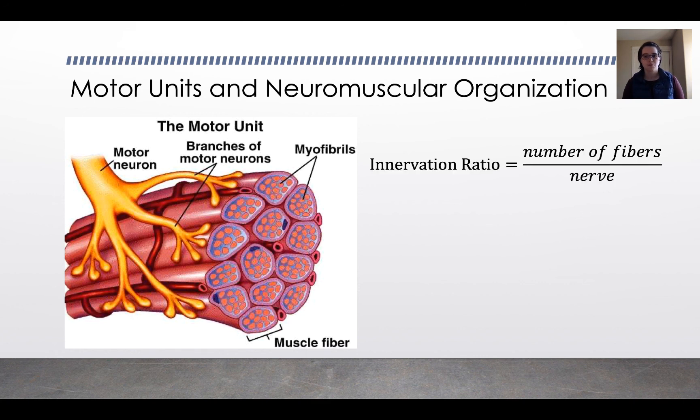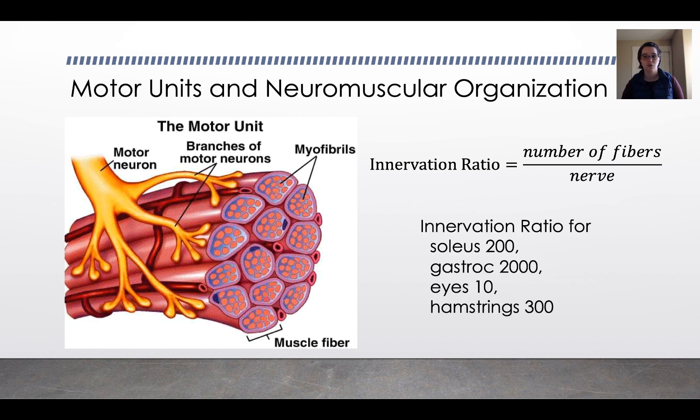The motor unit is characterized by the innervation ratio, which is the number of muscle fibers that are innervated or stimulated by any one nerve. For different muscles in the body there are different innervation ratios. For example, the soleus has an innervation ratio of 200, the gastroc 2000, the eye just 10, and the hamstrings 300. So the smaller the innervation ratio, the finer the motor control. The eyes have very fine motor control, whereas the gastroc has very un-fine motor control. As you get older, these ratios increase which results in a loss of fine motor control.